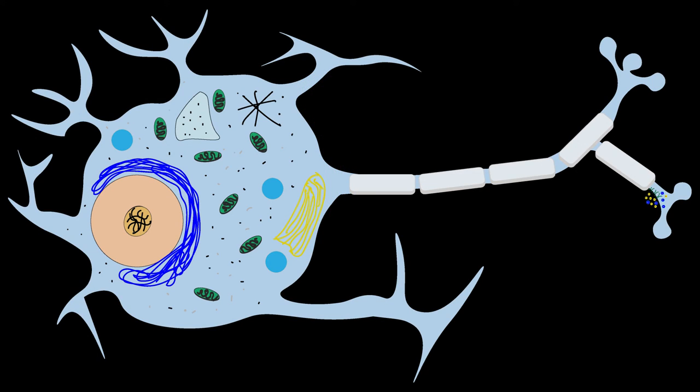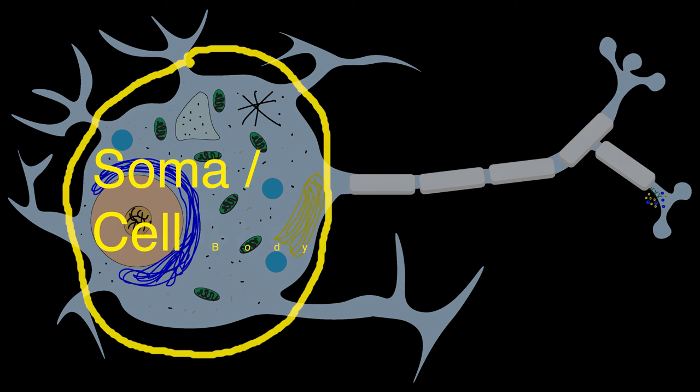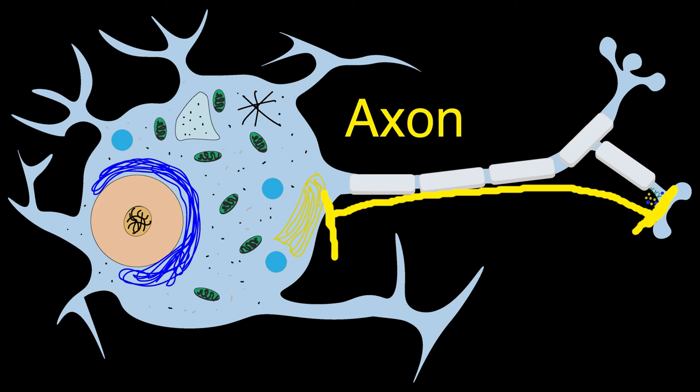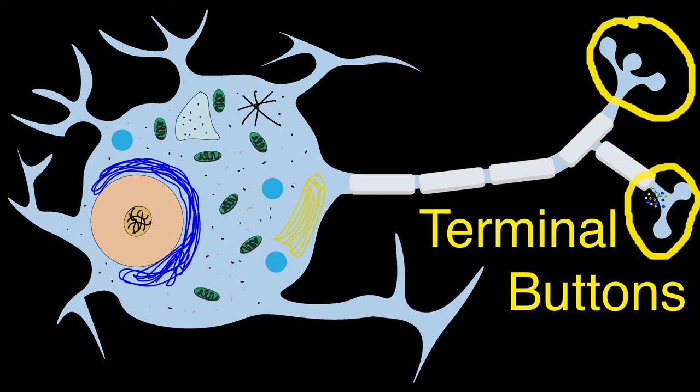So let's dive in and look at the parts of a neuron. There are many different types of neurons, all of which have four central parts: the soma or cell body, dendrites, an axon or axons, and terminal buttons.